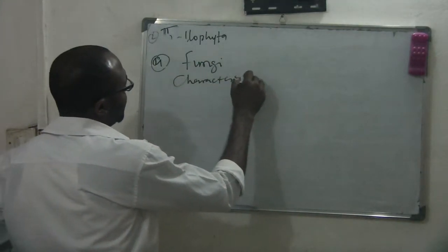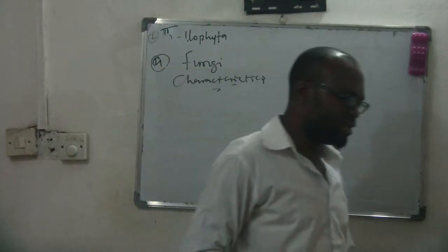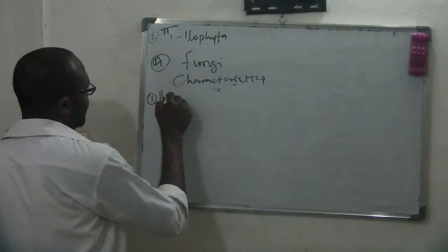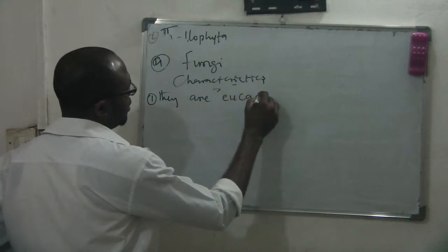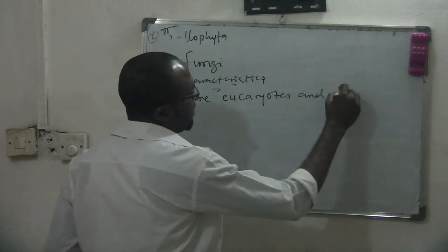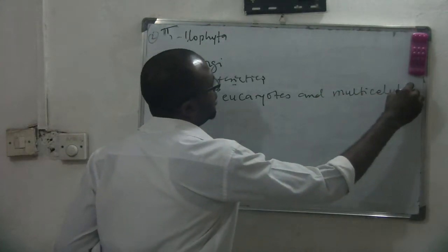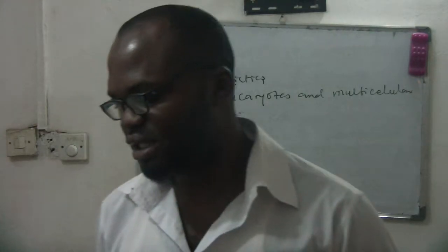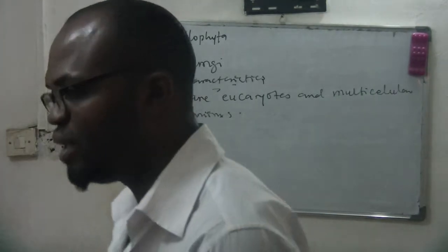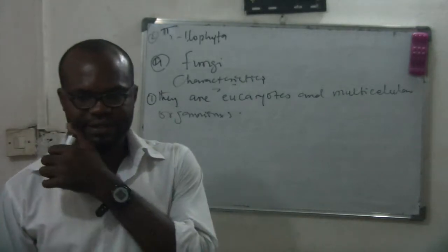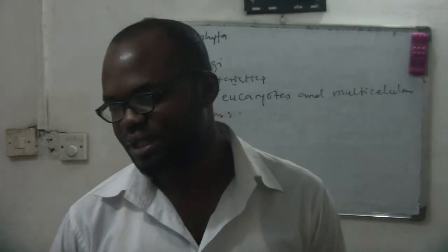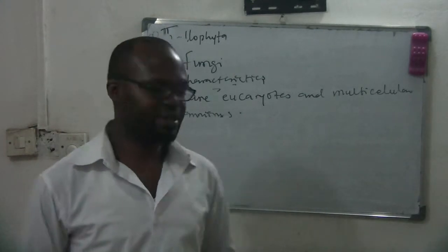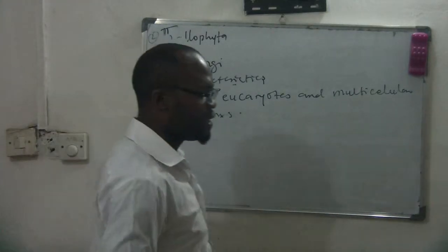What are the characteristics of fungi? Number one: they are eukaryotes and multicellular organisms. When we say eukaryotes, we mean that they have a well-defined nucleus. Multicellular simply means that they are made up of more than one cell.